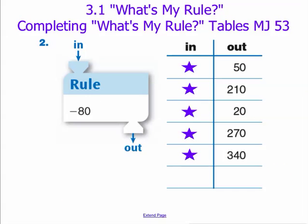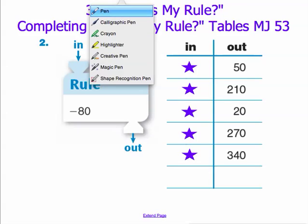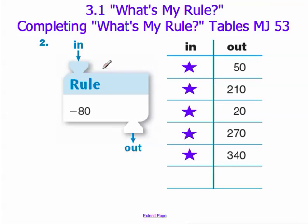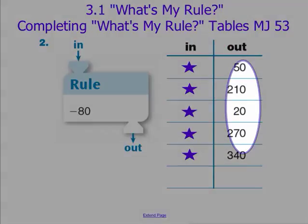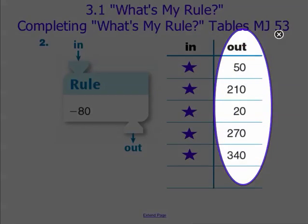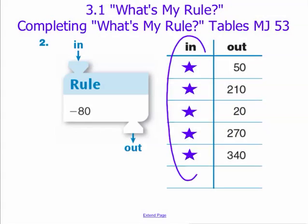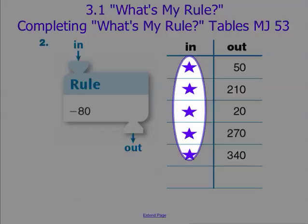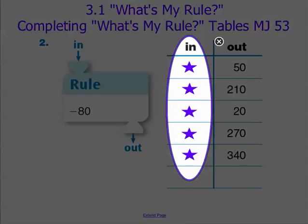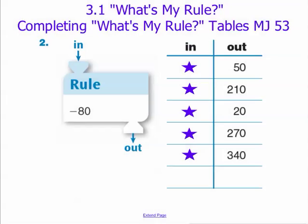Our second type of function machine is when our outputs are given and our inputs are unknown. In order to solve these problems we need to think a little bit backwards.